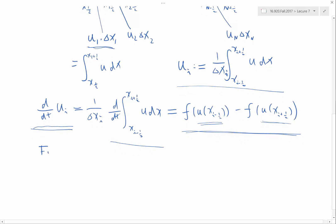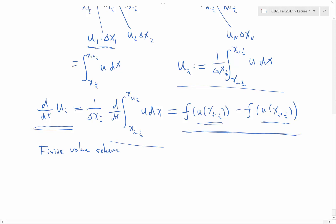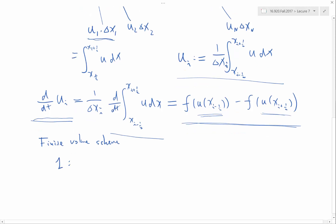So the whole technique of finite volume scheme is two parts. One part is this equation. For any finite volume scheme, we stick to this equation. This equation is universal for any finite volume schemes.